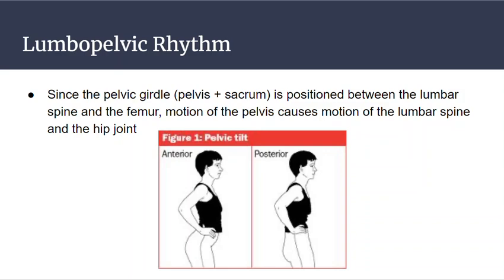There is a relationship between the lumbar aspect of our spine and our pelvis called the lumbopelvic rhythm. Because the pelvis can move, and the lumbar spine is on top of our sacrum, and the sacrum is part of our pelvis — our pelvic girdle — when you move the pelvis, the lumbar spine and the hip joint can move.